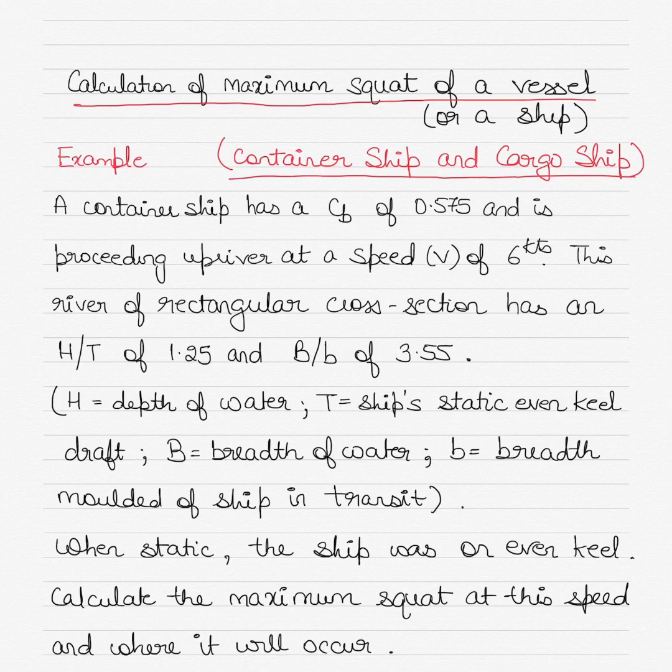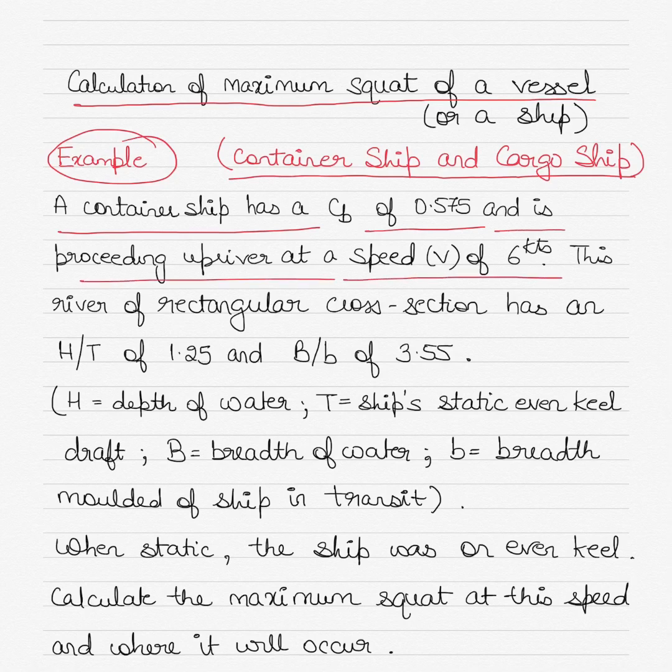Example one says that there is a container ship with a block coefficient Cb of 0.575 and it is proceeding upriver at a speed or velocity of six knots. This river of rectangular cross-section has an H/T ratio of 1.25 and B/b ratio of 3.55.